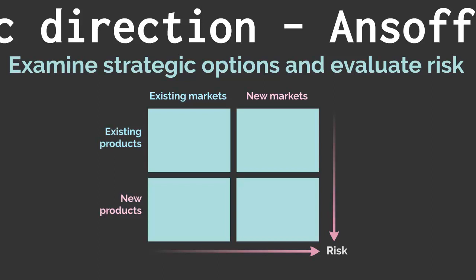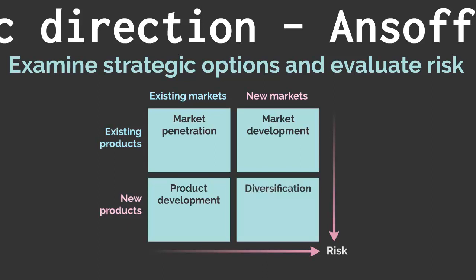In the Ansoff Matrix we have four rectangles, each representing a different strategy for growth. In the existing markets/existing products rectangle we have market penetration. Along the top right we have existing products in new markets. In the bottom left, organisations operate in the same markets but begin offering new products. And in the bottom right we have diversification — offering new products to new markets.